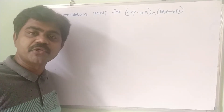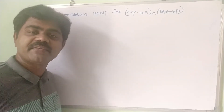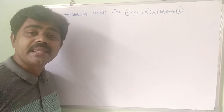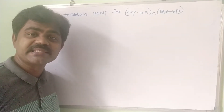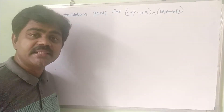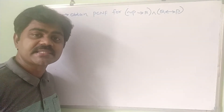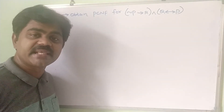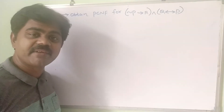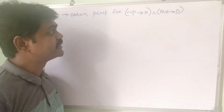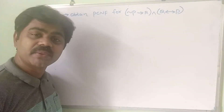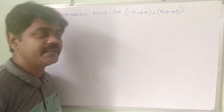Hi everyone, welcome to our channel. In the previous class we discussed about PDNF examples without using a truth table. Today we are going to discuss about PCNF without using a truth table. The given problem is: negation p implies r, and q double implies p.